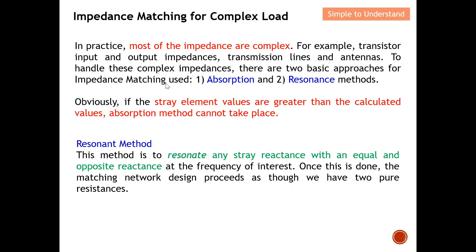...there are two basic approaches for impedance matching. The first one is the absorption method, which I have discussed earlier on. The other method is the resonant method, which we are going to discuss today. The resonant method is actually much more preferred compared to absorption, because if the stray element values are greater than the calculated values, the absorption method cannot take place — the stray elements cannot be absorbed. Hence you may need to consider using the resonant method.